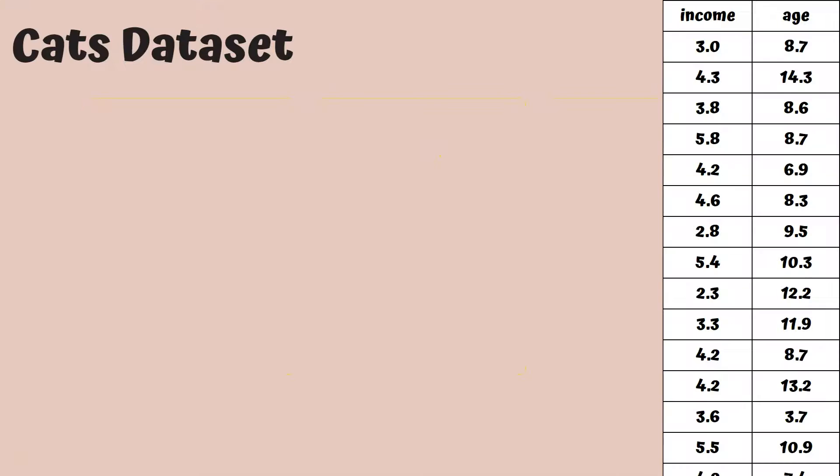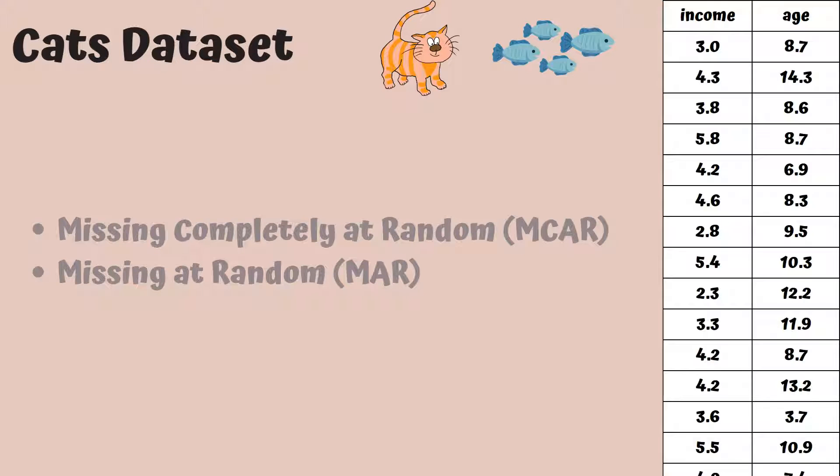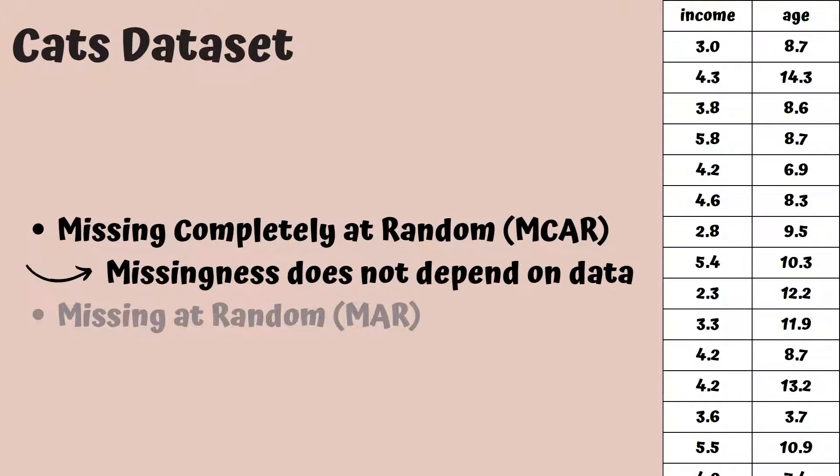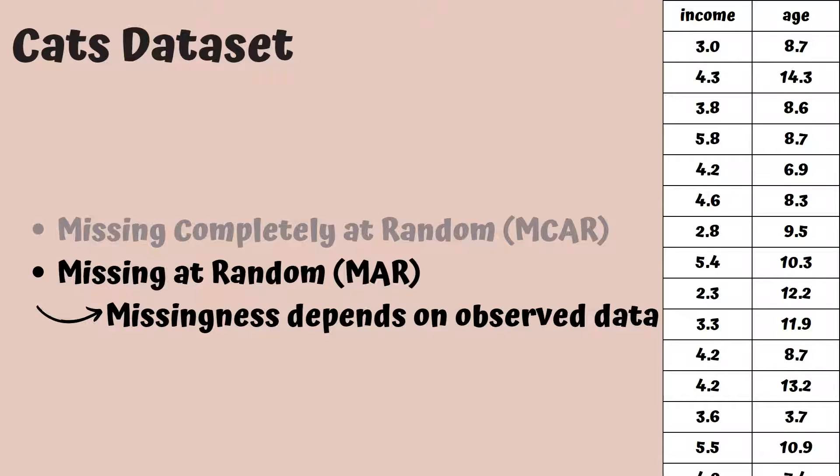We will use the cats data set that I introduced in a previous video, which is all about the ages and incomes of 30 cats, where income is measured in the number of fish. In the MCAR version of this data set, a completely random selection of values are missing. In the MAR version of the data set, we observe the pattern that cats who are a little bit older tend to have their incomes missing.